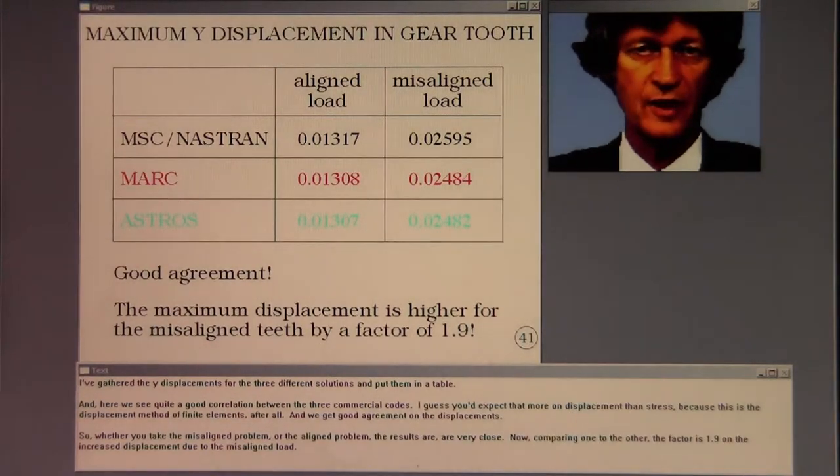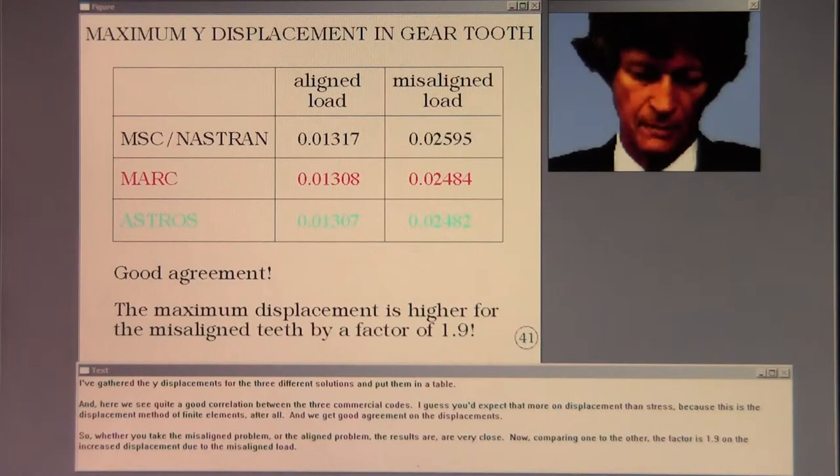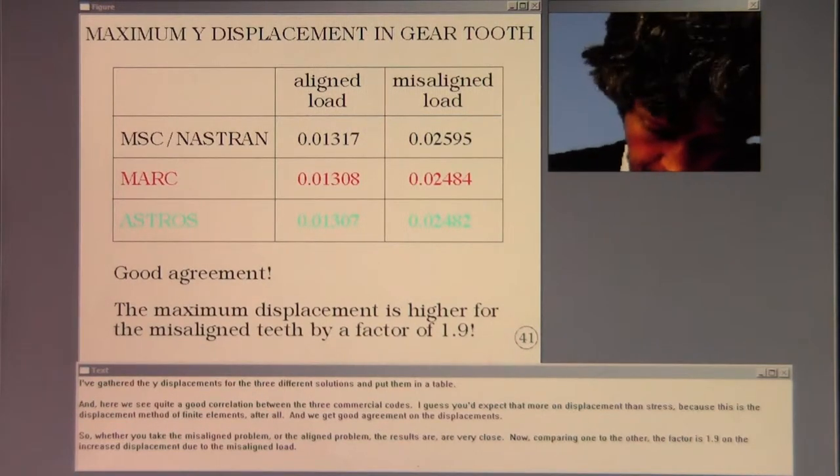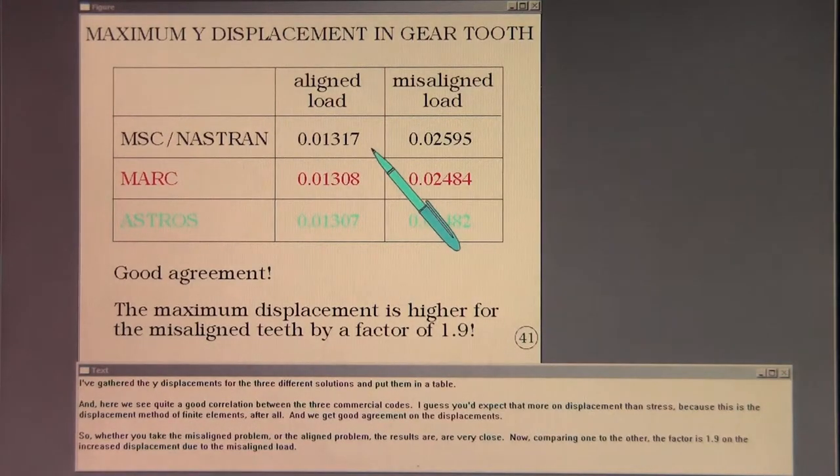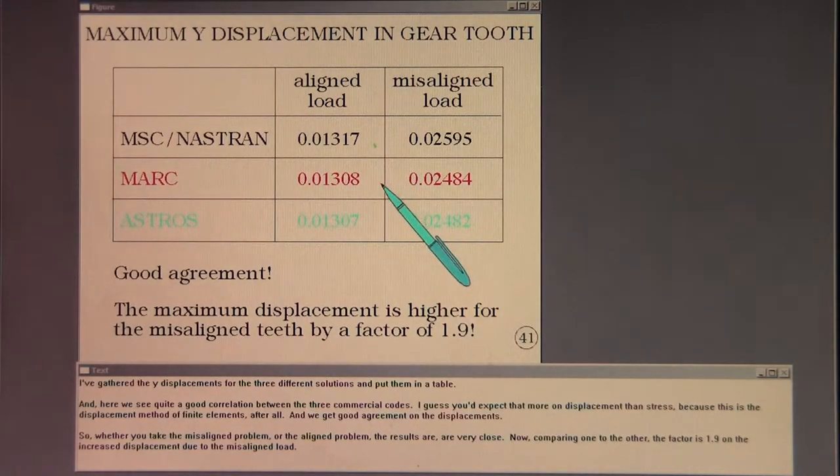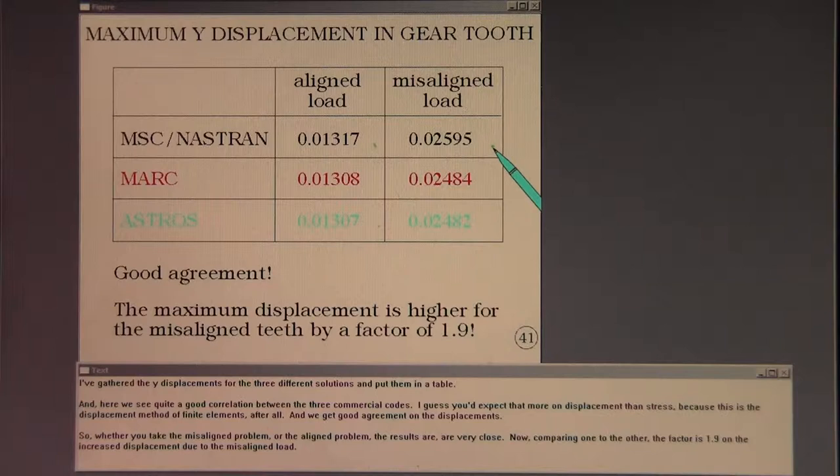I've gathered the Y displacements for the three different solutions and put them in a table. And here we see quite a good correlation between the three commercial codes. I guess you'd expect that more on displacement than stress because this is the displacement method of finite elements after all, and we get good agreement on the displacements.